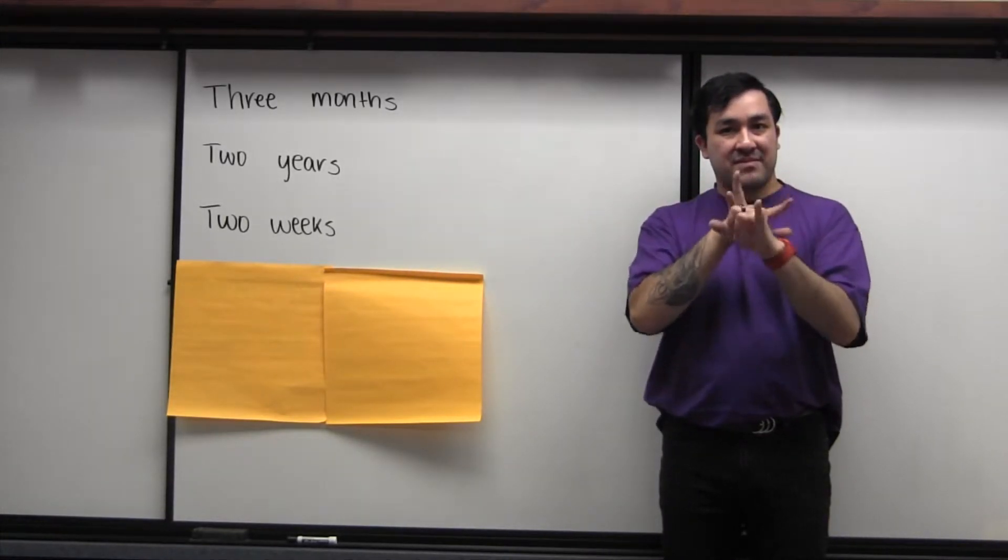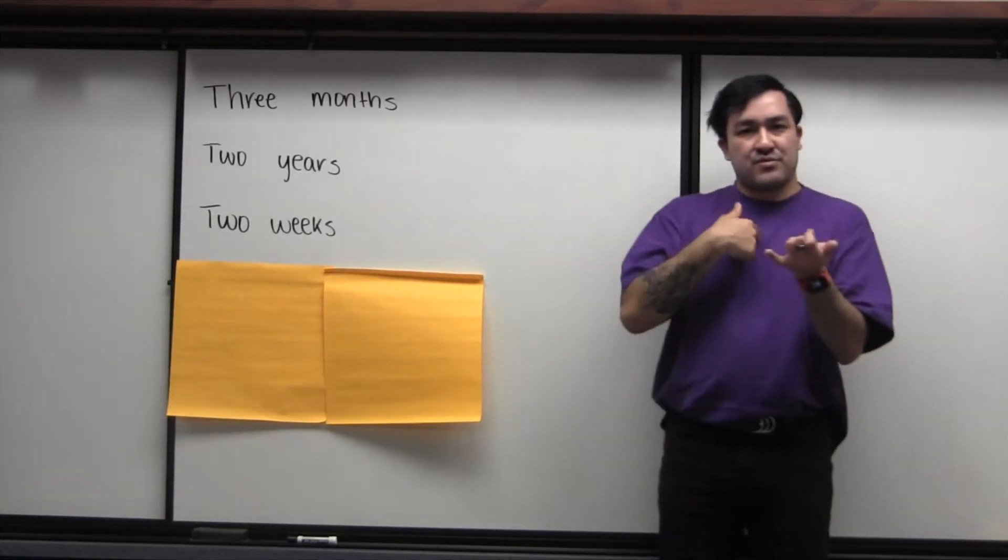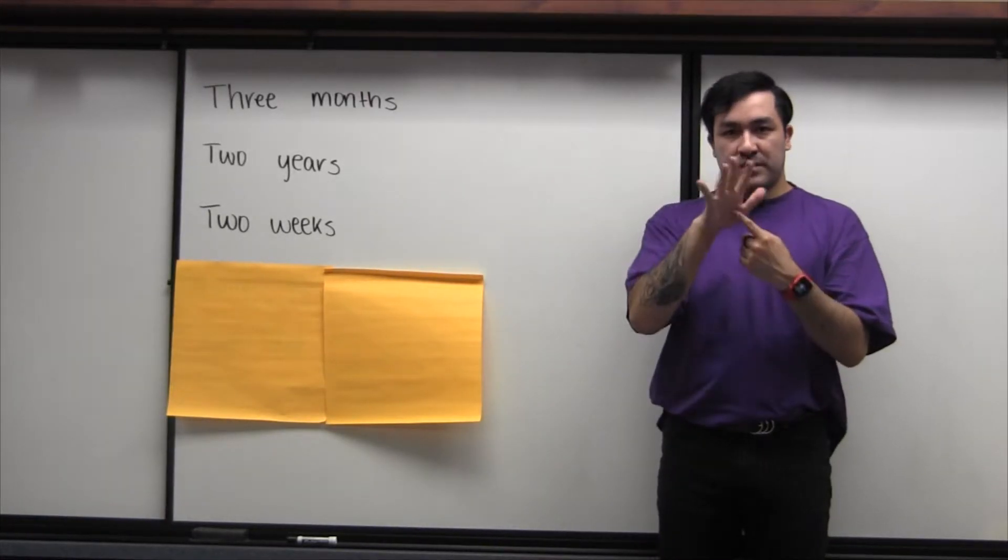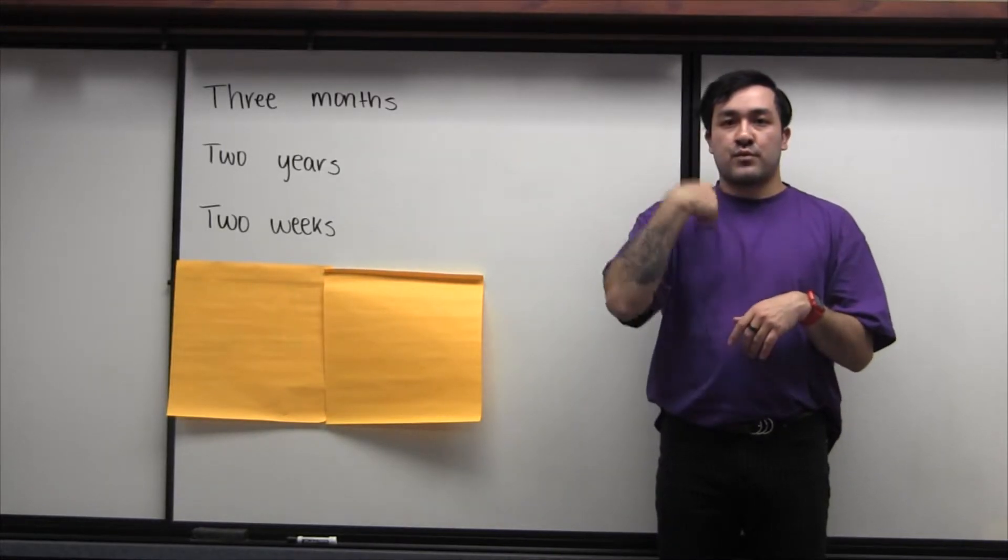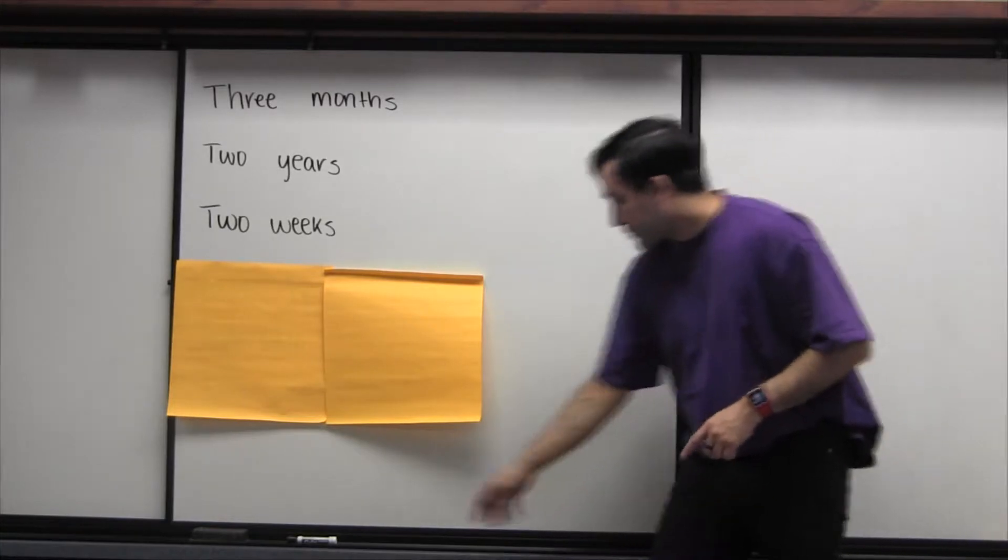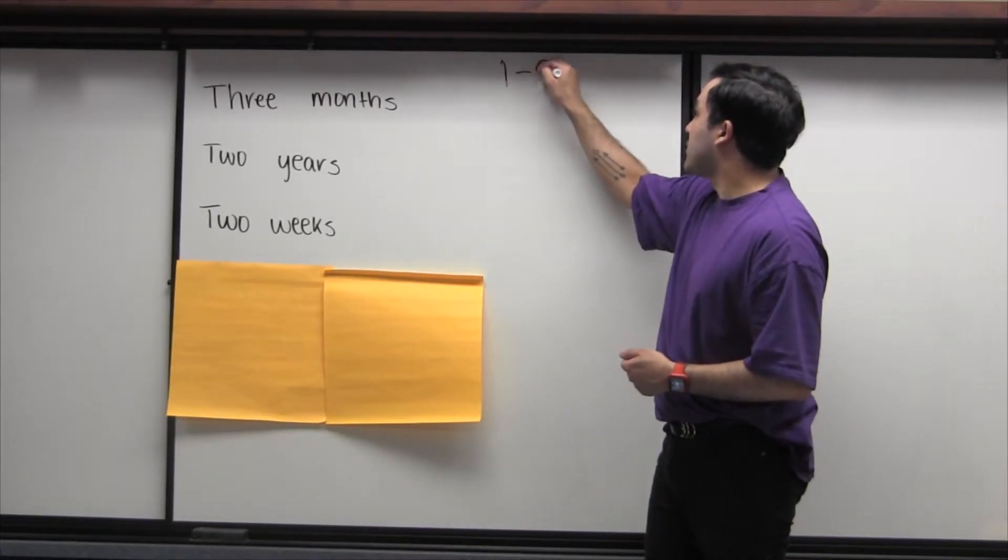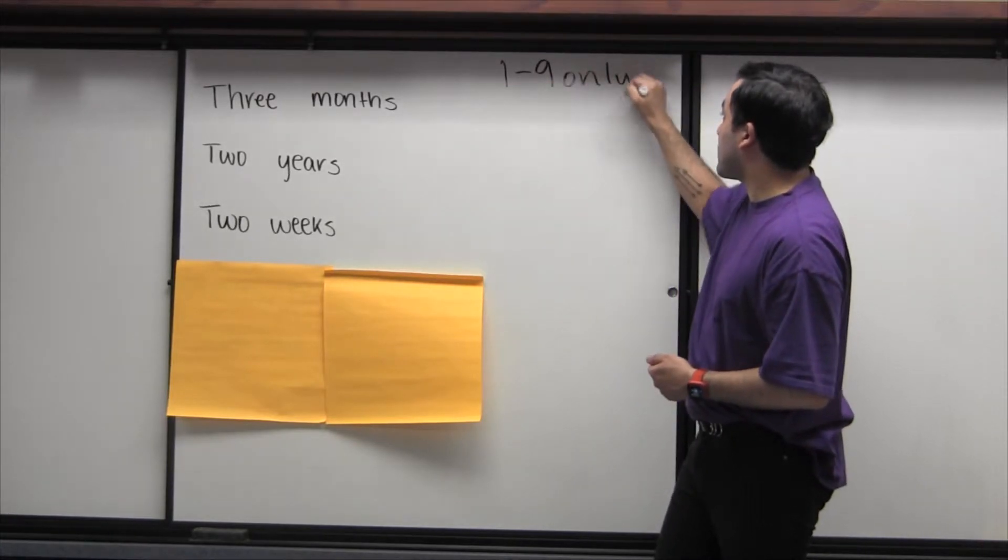In ASL though, we can take two signs and definitely 100% sign them at the same time and hold both meanings to create a singular sign that means both things. Today we are going to talk about different ways to incorporate numbers and signs. And really, there is one important rule.